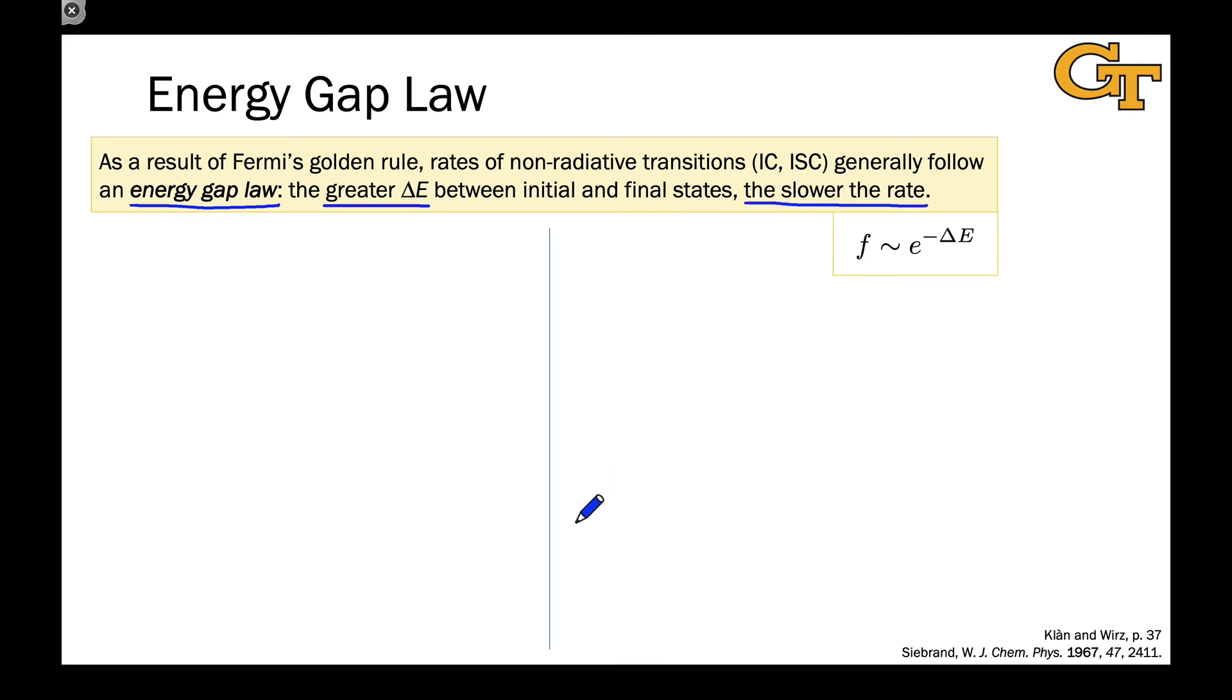Very important intuition to develop. And it's an exponential dependence. So we can think about this like there is a prohibition factor, F, that is proportional to or similar to e to the negative delta E. As delta E increases, this number gets tiny very rapidly.